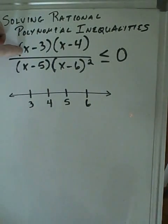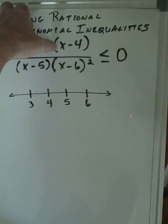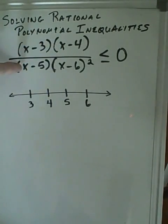Notice we use three because putting three in here would make the numerator zero. Putting four in here would make the numerator zero. Putting five here would make the denominator zero.